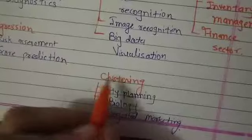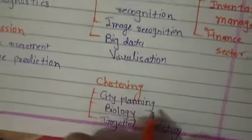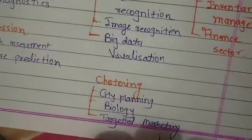Clustering - this is unsupervised learning. This is the third part of clustering. This is used in city planning, biology, and targeted marketing.